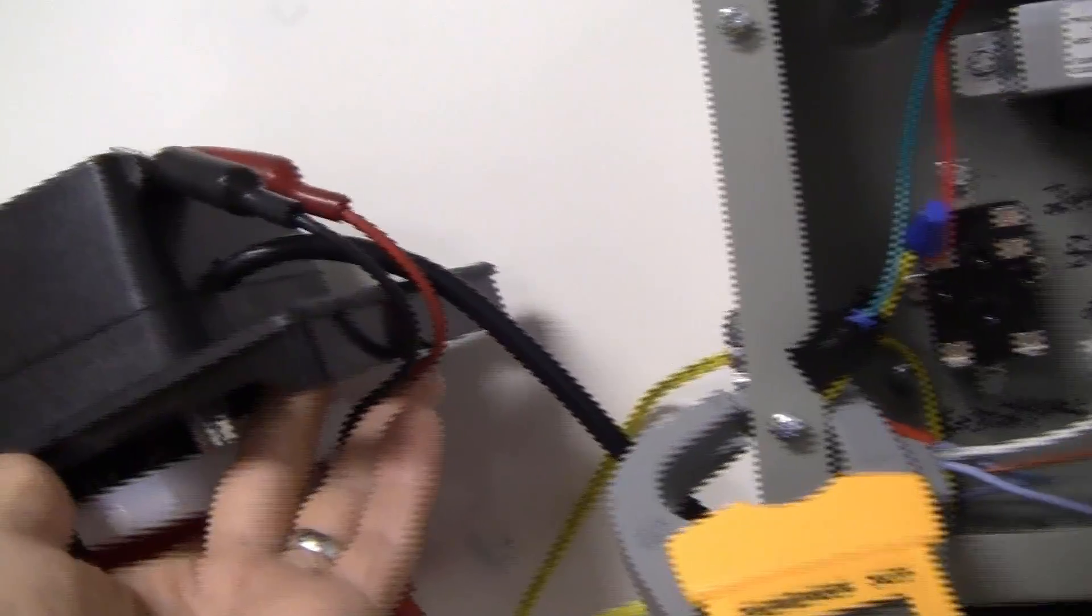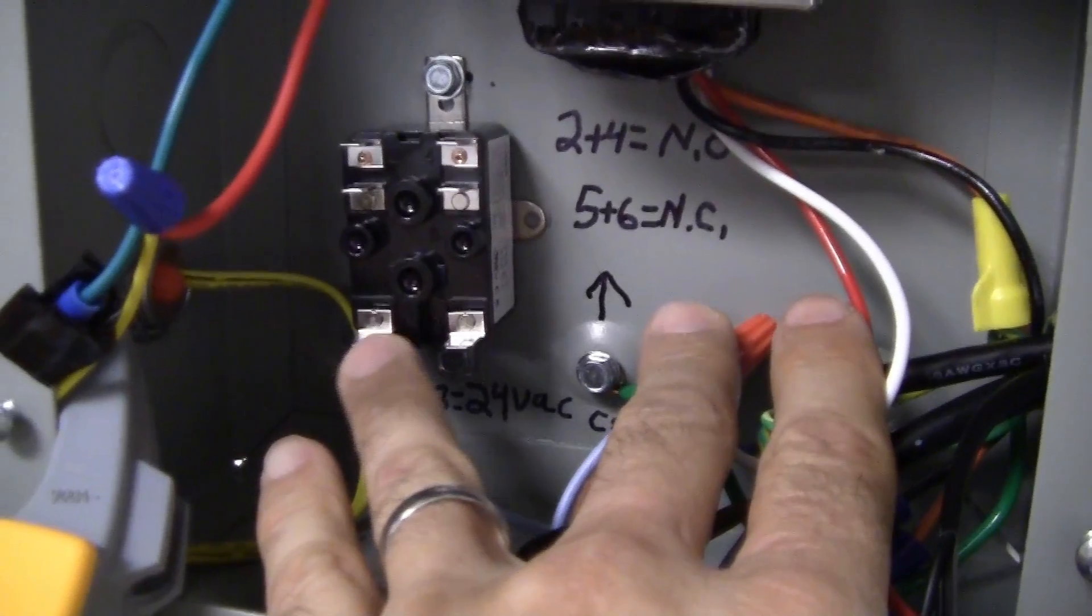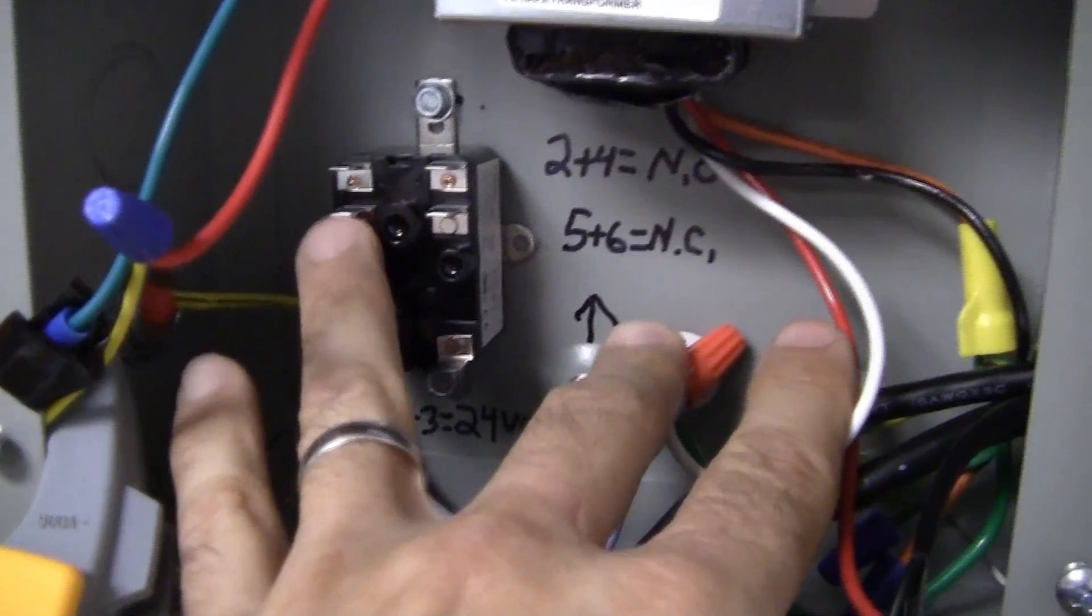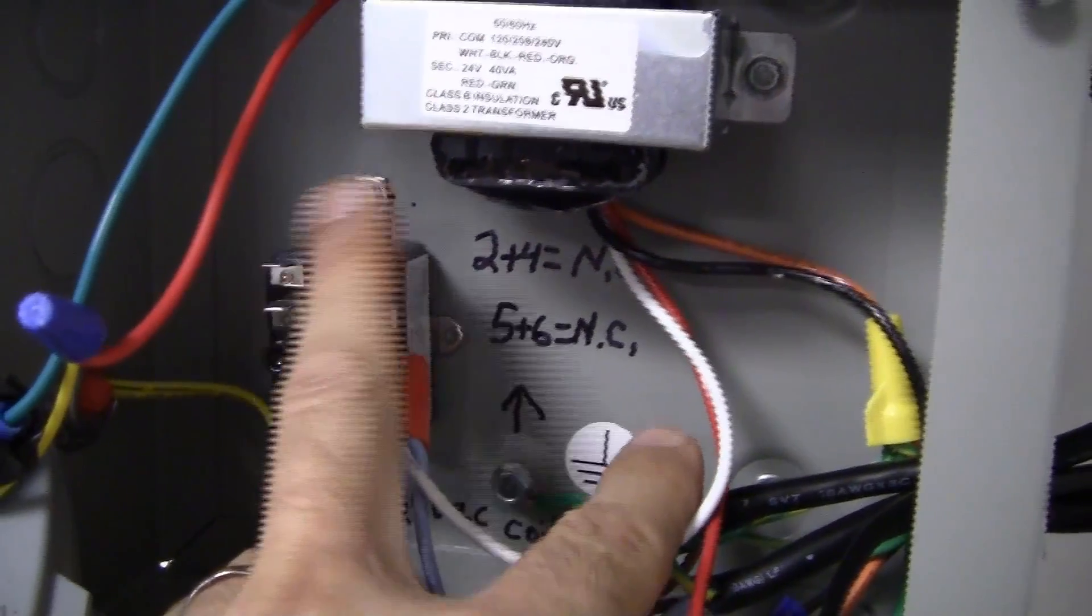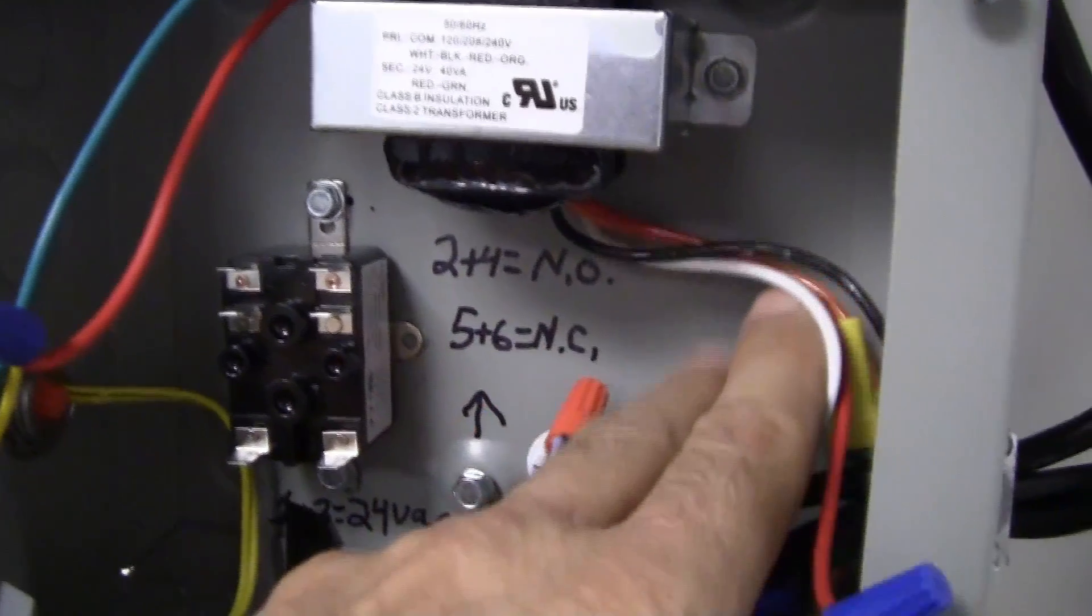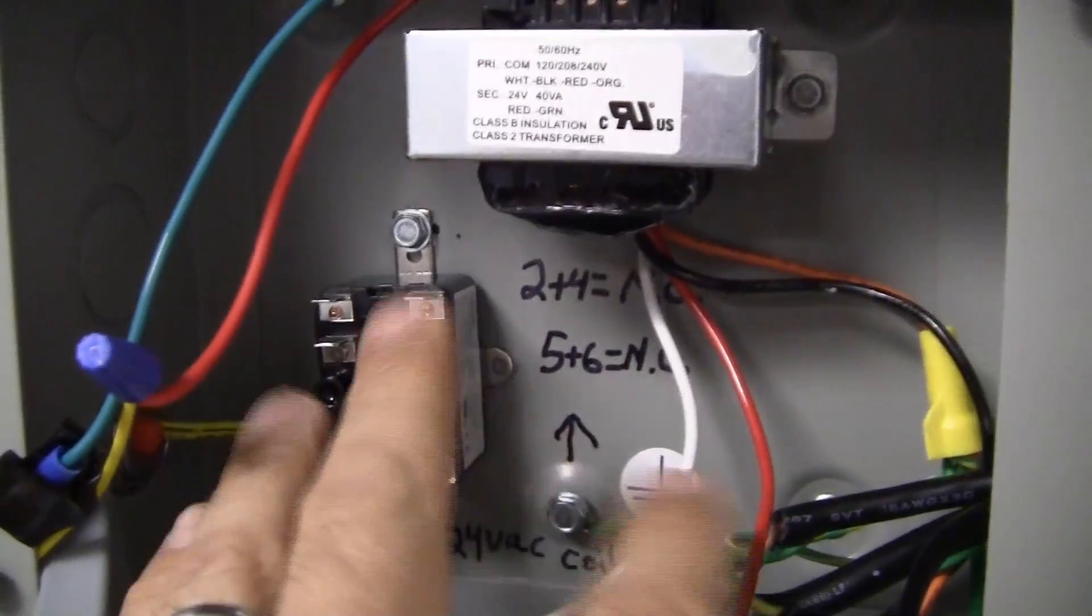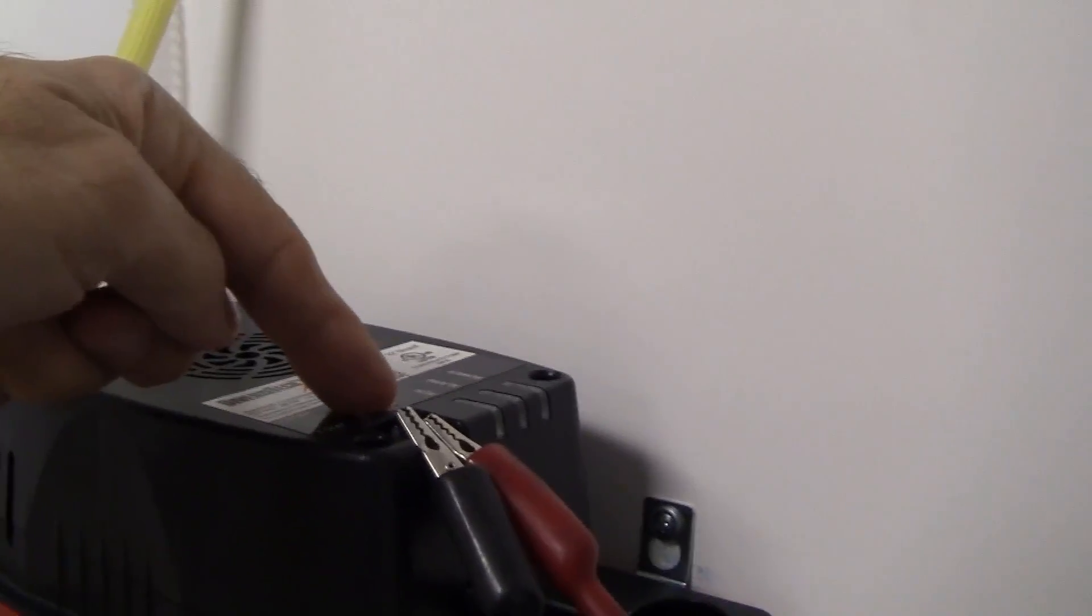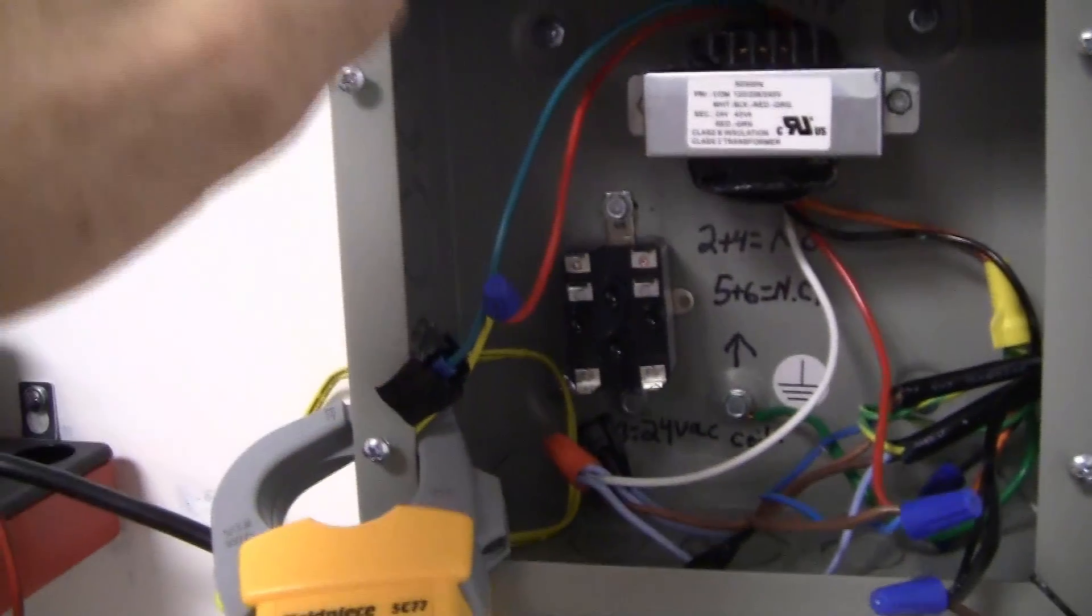When you look at my relay these two lines here at the bottom is my 24 volt coil, these next two lines up are normally closed and these next two terminals are normally opened terminals two and four. When the relay opens because the safety circuit opens because we've reached a high level in the float it's going to shut that power off going to the mini split evaporator.